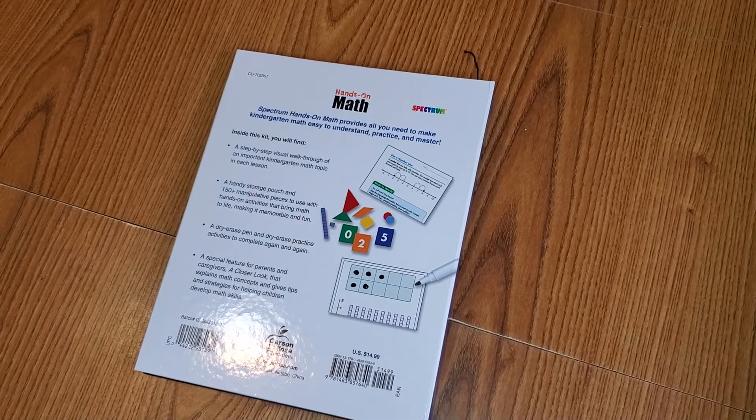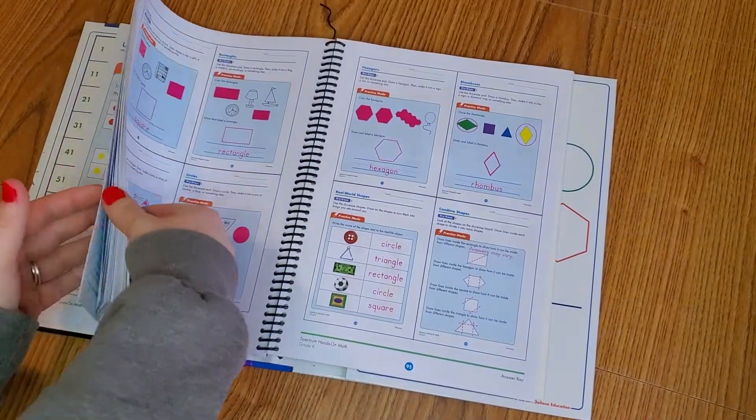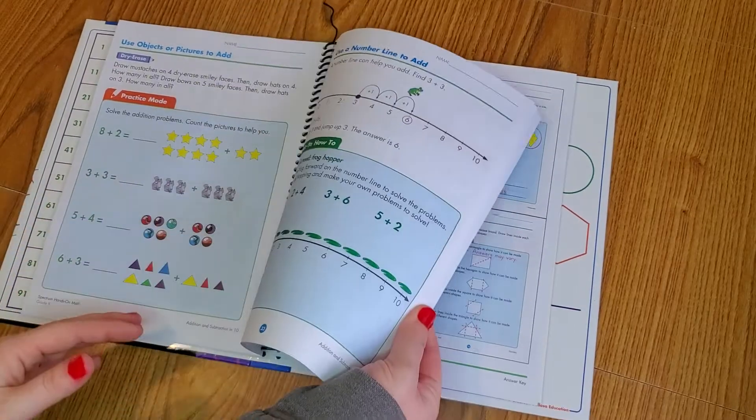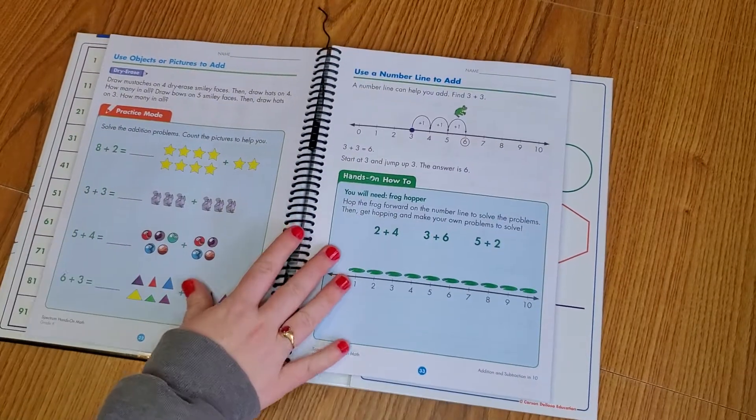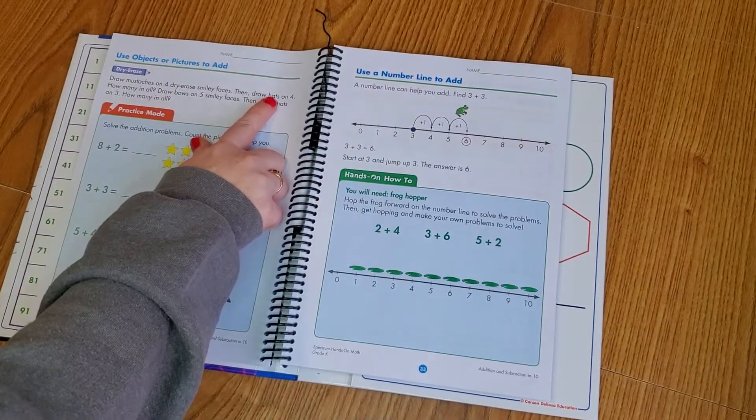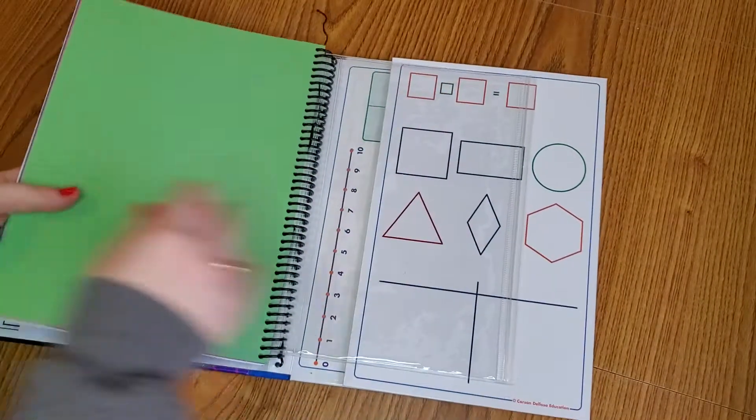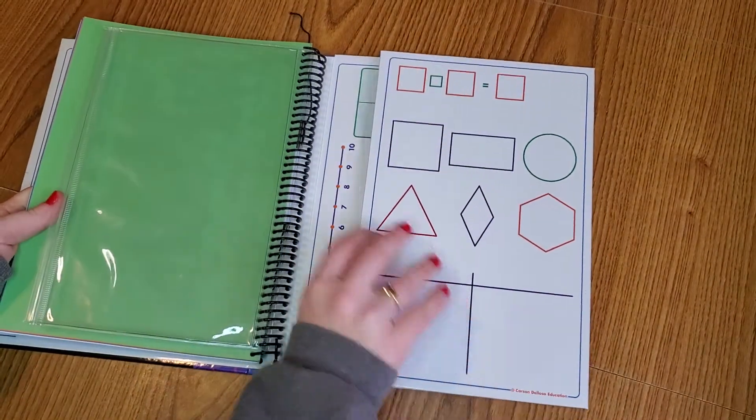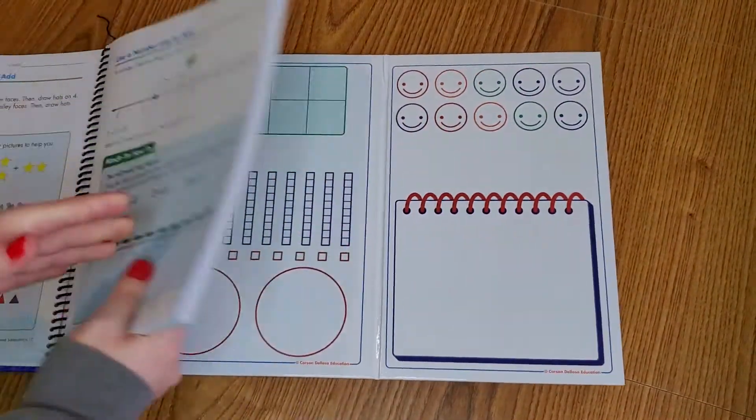And then there's the back of the book. I can go back really quick and show you an example of how you would use it. Draw mustaches on four dry erase smiley faces, then draw hats on four. How many in all? So then you would go back here to do the happy faces graph, and you would do what it tells you, and then you're going to add.